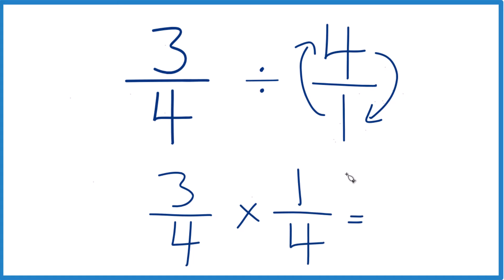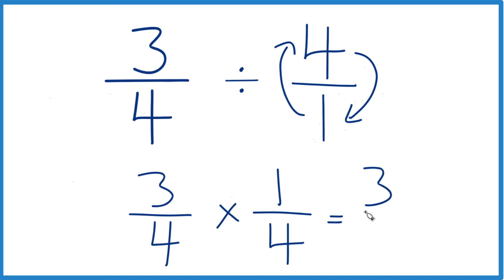From here, we just multiply the numerators, 3 times 1 is 3, and then the denominators, 4 times 4, that's 16.